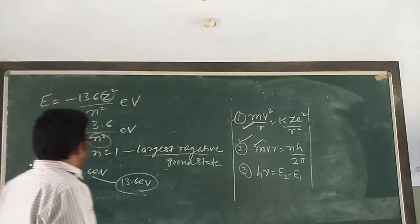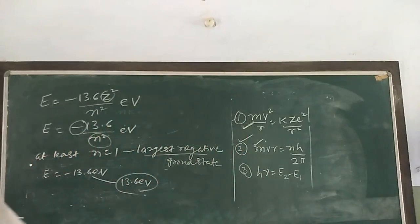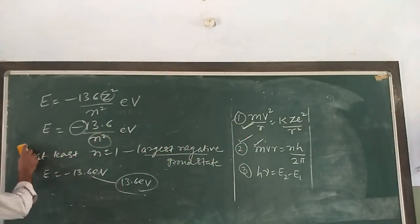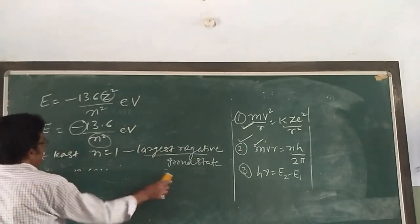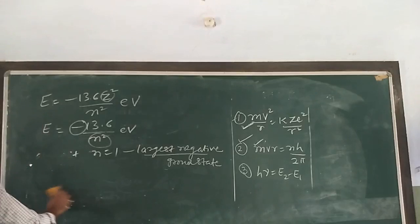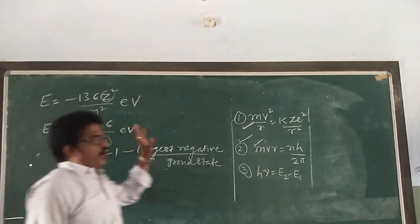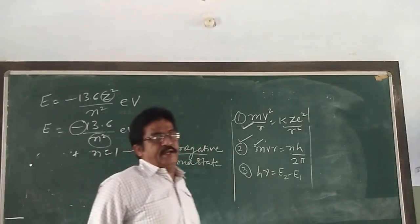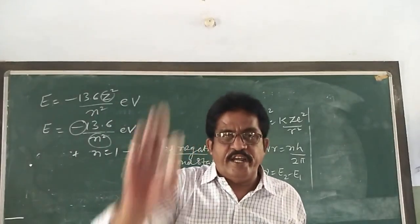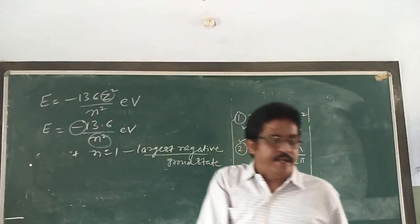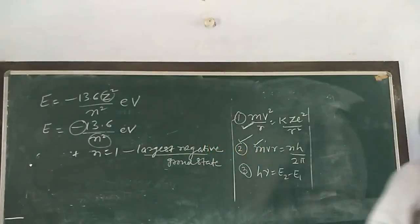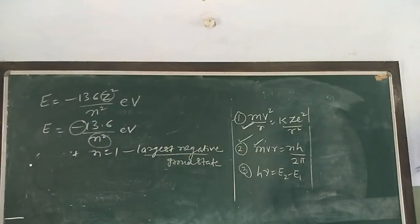As n increases, the value of negative energy decreases — energy is progressively larger in the outer orbits. That is all for today. Bye bye, thank you.